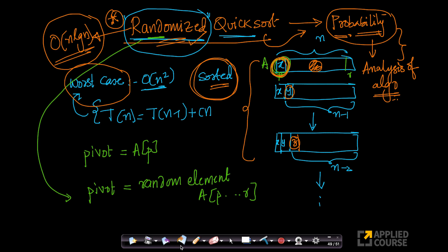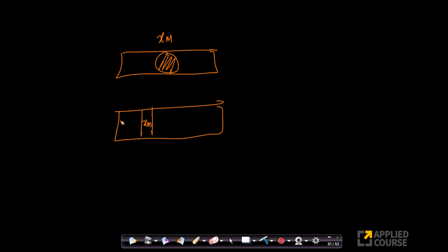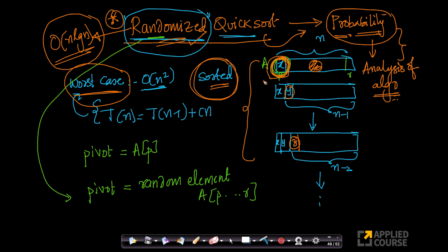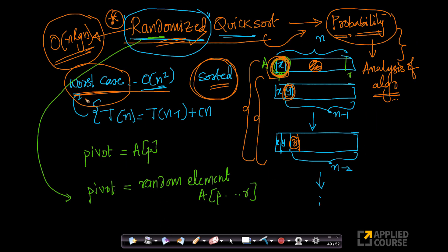Instead of picking the smallest element every time, I am just picking a random element as my pivot — that is it, my problem is solved. Intuitively it makes sense: when I pick a random element xm as my pivot, all elements less than or equal to xm go on one side, all greater go on the other. The probability that xm is the smallest element every time is extremely low, almost close to zero. The worst case happens only when every single time you pick the smallest element as the pivot. Randomized quicksort has a time complexity of O(n log n), while the non-randomized version has a worst case of O(n²). That is the important difference you should always remember.